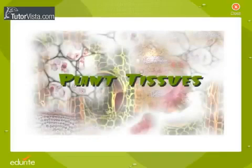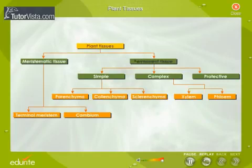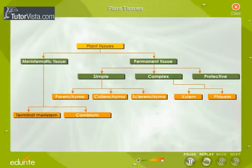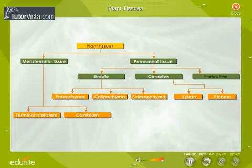Plant tissues are of two types: meristematic tissue and permanent tissue. Meristematic tissues are further divided into two categories: terminal meristem and cambium. The permanent tissues can be grouped into three categories on the basis of functions they perform: simple, complex, and protective tissues.